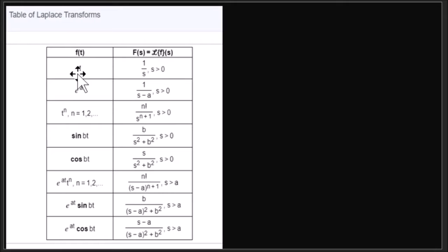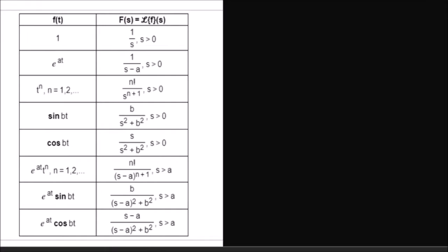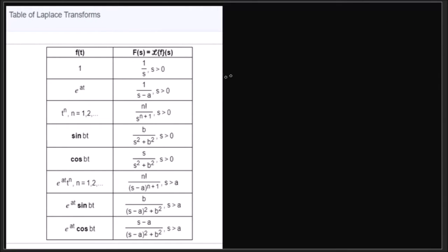Of course we already know that the Laplace transform of a constant, for this one a constant is 1, so the Laplace transform is 1 over s. So for example, find the Laplace transform of k. Since k is a constant, that will be k over s.